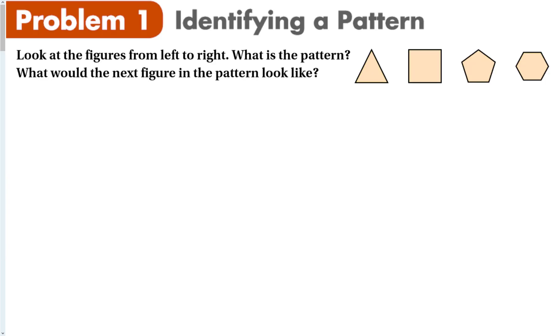All right, so let's identify a pattern. Look at the figures from left to right. What is the pattern? And what would the next figure in the pattern look like? As I look at these different figures, the most obvious thing in the pattern is the number of sides. So this has three sides, four, then five, then six. So what we would really want to do is draw a seven-sided figure, also known as a heptagon.